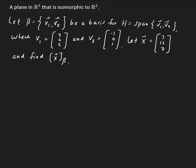And we want to show how to get this vector in terms of the basis vectors. And so by doing this, we can show that a plane in R³ is isomorphic to R².